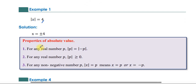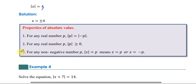Property of absolute value: for any real number p, absolute value of p is equal to the absolute value of negative p. For any real number p, absolute value of p is greater than or equal to zero. For any non-negative number p, absolute value of x equal to p means x equals p or x equals negative p.